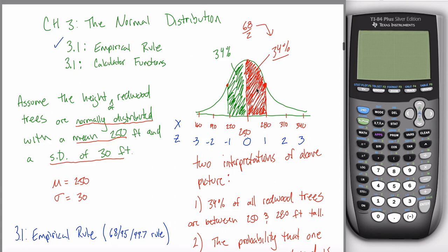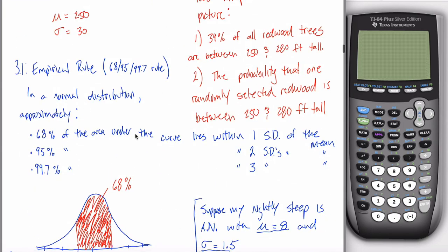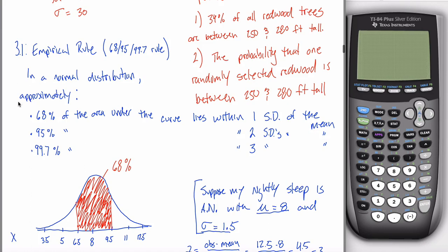Now that you're good with that, it turns out there's a better way to find these areas. You're supposed to learn the empirical rule — it's a good way to ballpark areas and get some intuition for the picture, which is really important. But recall: when we first started talking about the empirical rule, these percentages are all approximations. It's not true that exactly 68% of the area lies within one standard deviation of the mean.